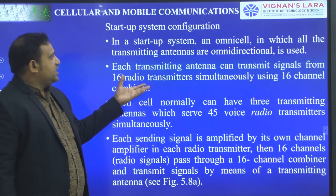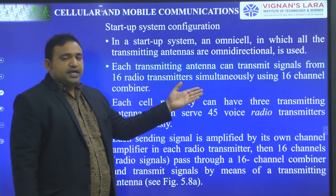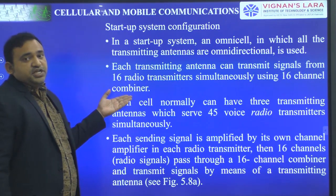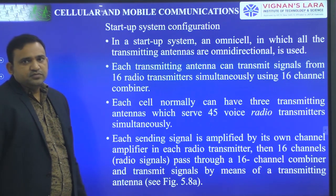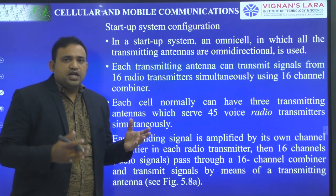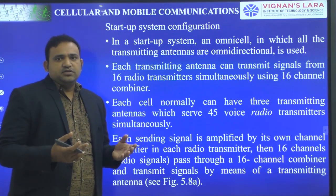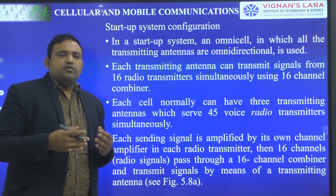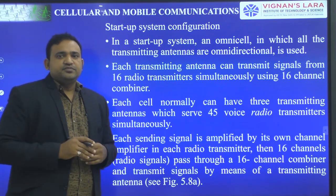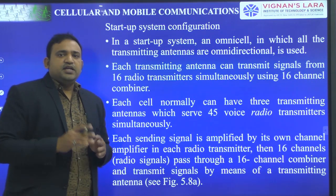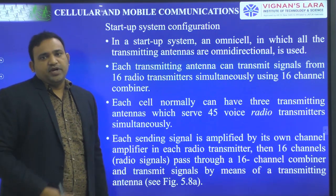All the Omnidirectional Antennas are set to be the transmitting antennas. Each transmitting antenna can transmit signals from 16 radiotransmitters simultaneously using a 16-channel combiner. Channel combiner means different channels are used to transmit using a single antenna. If the antenna's capability of transmitting is 16 channels, then we are using a 16-channel combiner.